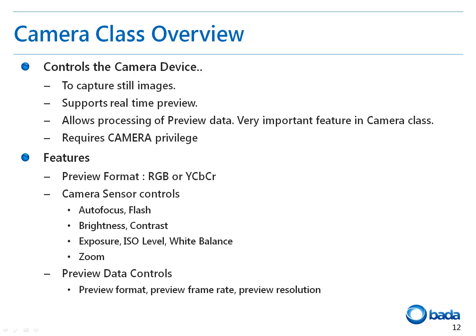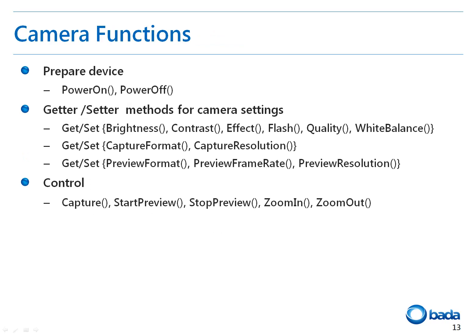For real-time previews, settings for the preview format, preview frame rate, and preview resolution are also provided. The camera class provides APIs to power the device camera on and off. Many getter and setter functions are provided to get or set camera settings such as brightness, contrast, white balance, image capture format and resolution, preview format, preview resolution, etc. Apart from these, it provides APIs to capture images, preview video data, and zoom in and zoom out functionalities.